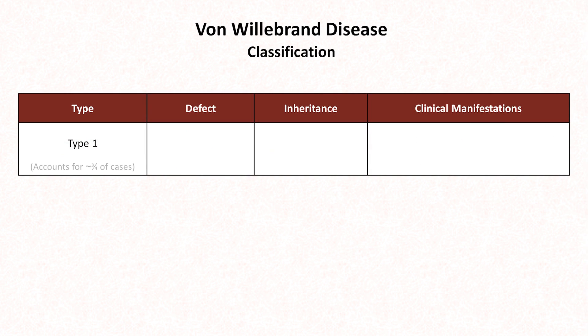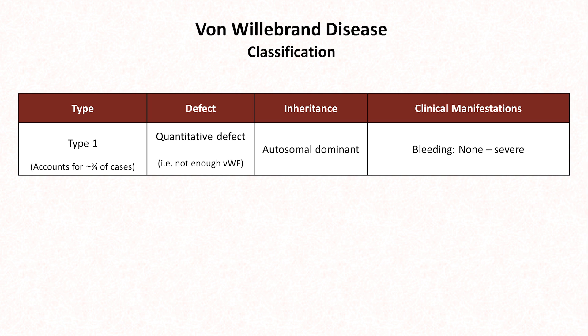Due to the complexity of von Willebrand disease, a classification system has been developed based predominantly on the pathogenesis. In type I disease, which accounts for roughly three-quarters of patients, the defect is a quantitative one in which the amount of von Willebrand factor present is less than normal. The inheritance pattern is autosomal dominant, and bleeding can range from nonexistent to severe.